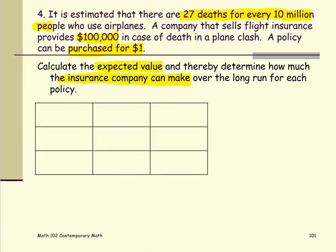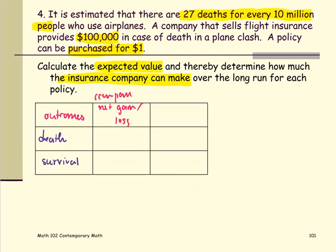The first column will be the column for the outcomes or possible outcomes — in this case, the death case or the survival case. The next column is going to be the column of net gain or net loss for the company, so this is based on the company's side. And the last column is the probability of each outcome.